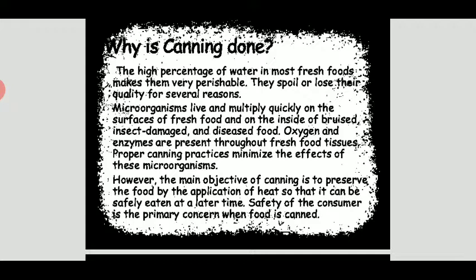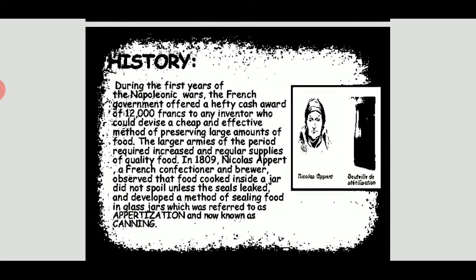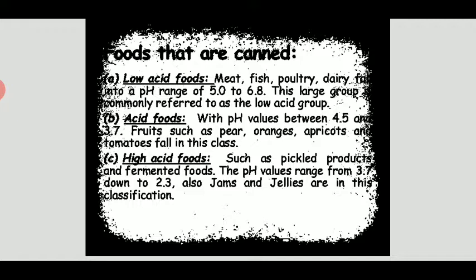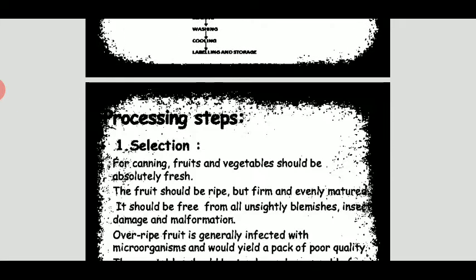The history of canning started in 1809. There are three categories of foods that can be canned: low acid foods with pH ranging from 5 to 6.8, which includes most food groups; acid foods with pH between 3.7 to 4.5 like citrus fruits and vegetables; and high acid foods with pH ranging from 2.3 to 3.7, which includes processed foods like jams and jellies.